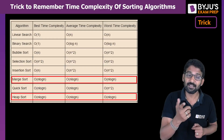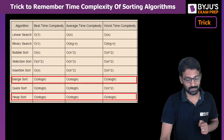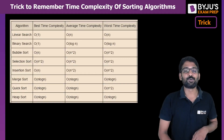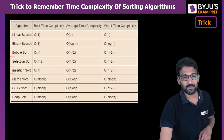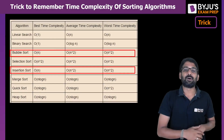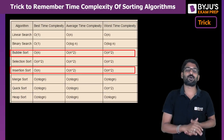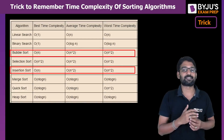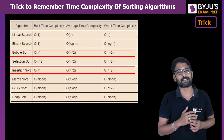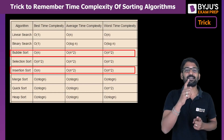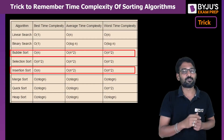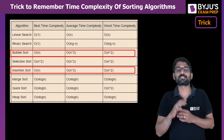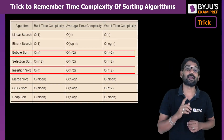Similarly, there is another observation: bubble sort and insertion sort also have the same time complexity in all cases. In the best case, it is O(n). In the average and worst cases, it is O(n²).